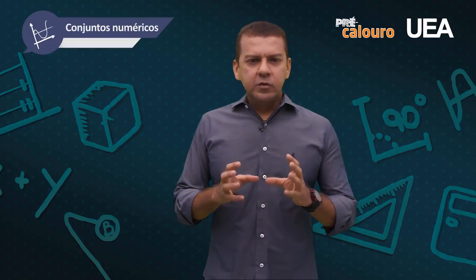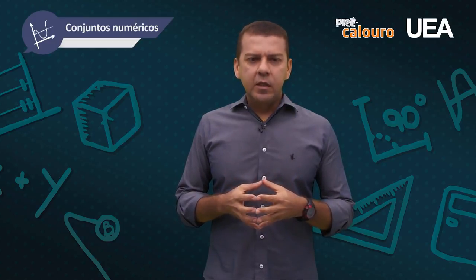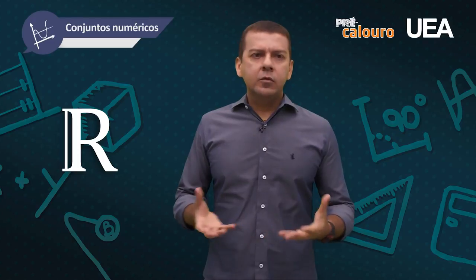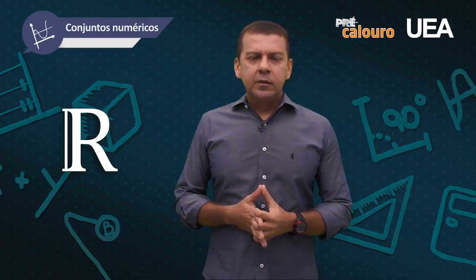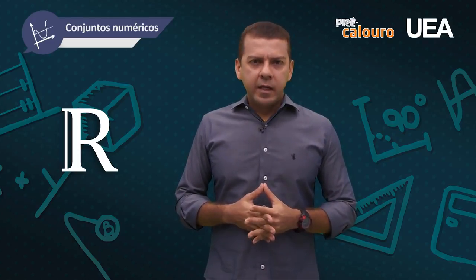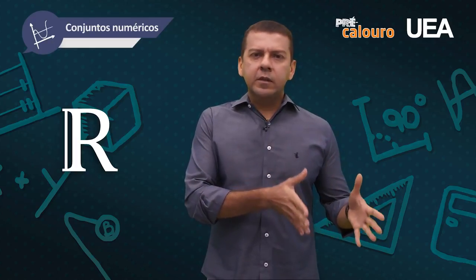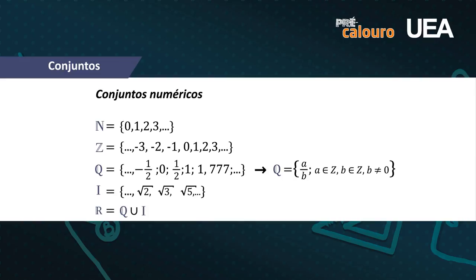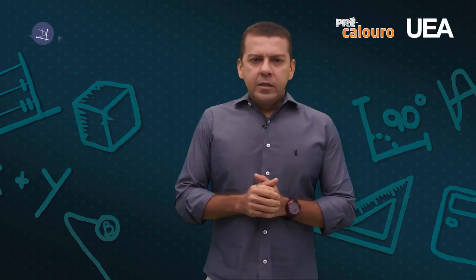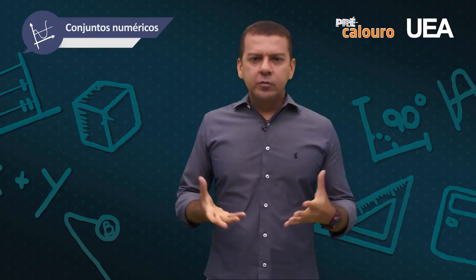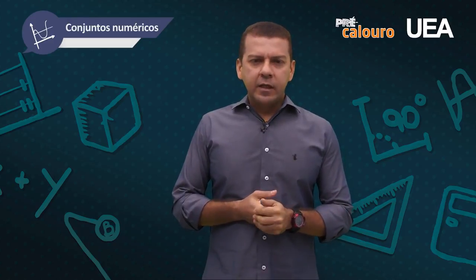Quando reunimos todos esses números, temos o conjunto soberano, que é o conjunto dos números reais. O que é o conjunto dos números reais? É a união entre os conjuntos racionais — todos os números escritos na forma de fração — e os irracionais — os que não são escritos na forma de fração. Eles podem ser representados em resumo na forma de um diagrama de Venn.